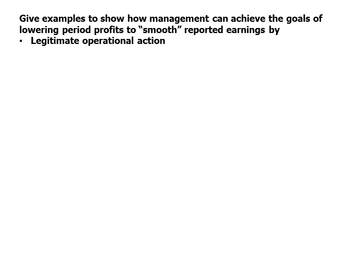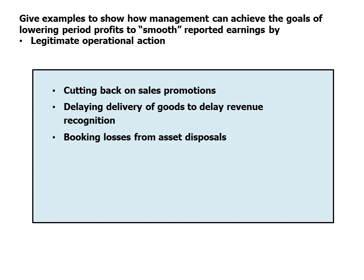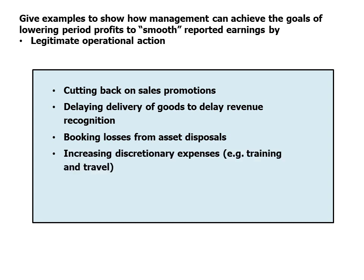Give examples of legitimate operational actions to lower period profits and smooth reported earnings. These include cutting back on sales promotions and discounting, delaying delivery of goods already ordered to push revenue recognition to the next period, booking losses from asset disposals, and increasing discretionary expenses on things such as training, travel, and general company marketing.